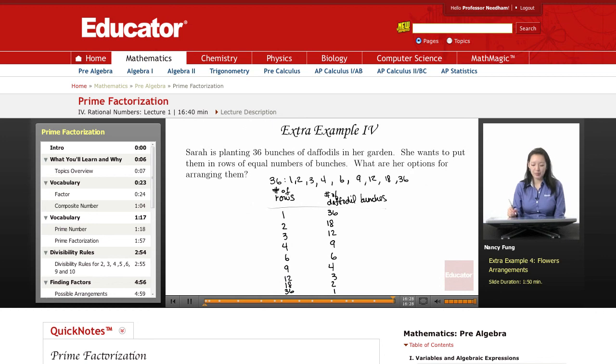So these are all her different options. Probably the best option if she wanted a square would be the 6 times 6, but she might want to have a different design in her garden.